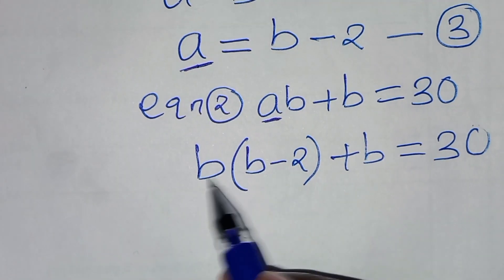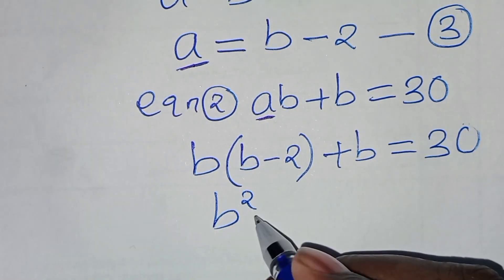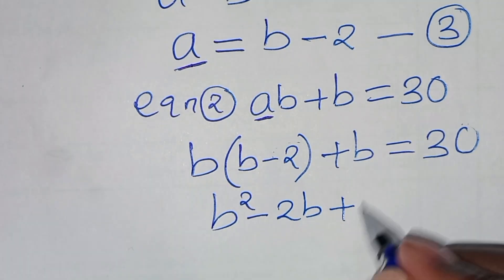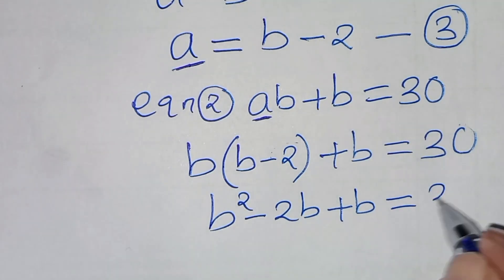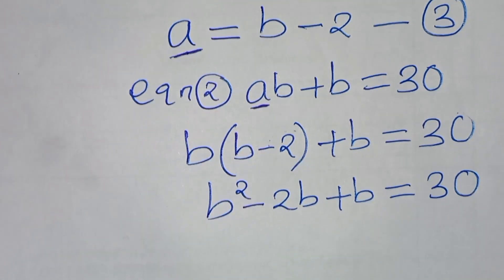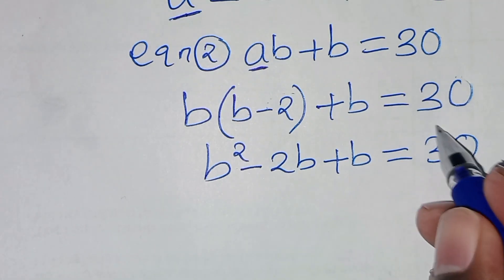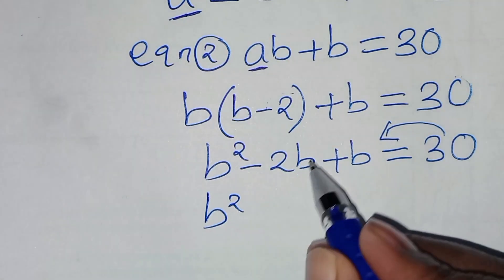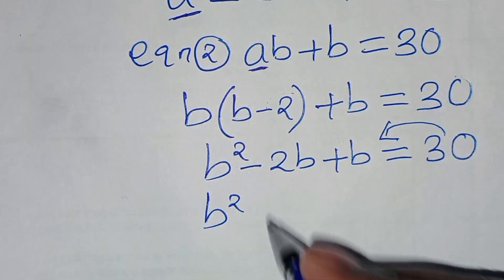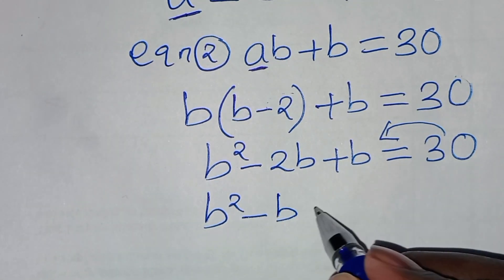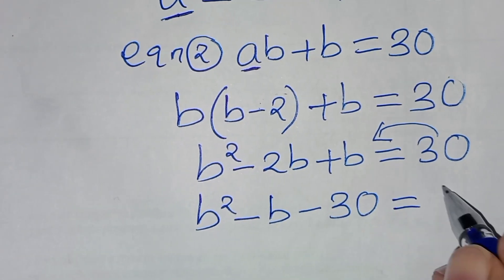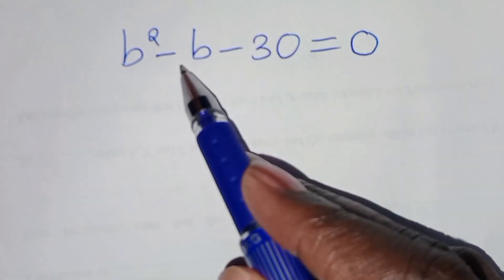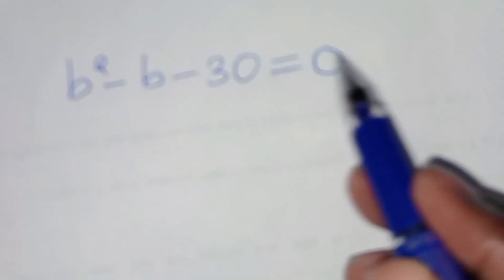Expanding: b times b is b squared, and b times minus 2 is minus 2b, then plus b equals 30. Taking 30 to the left hand side, we get b squared minus 2b plus b minus 30 = 0, which simplifies to b squared minus b minus 30 = 0.